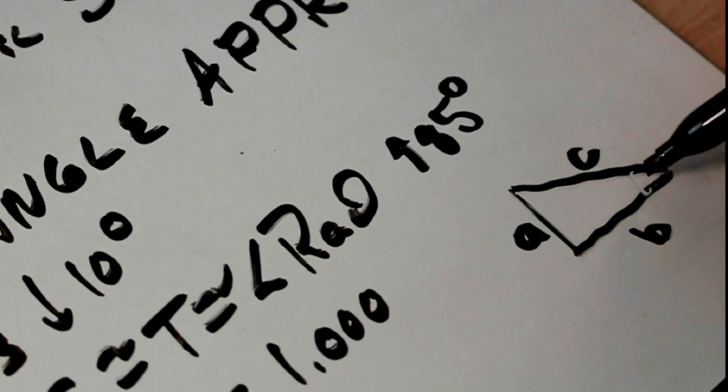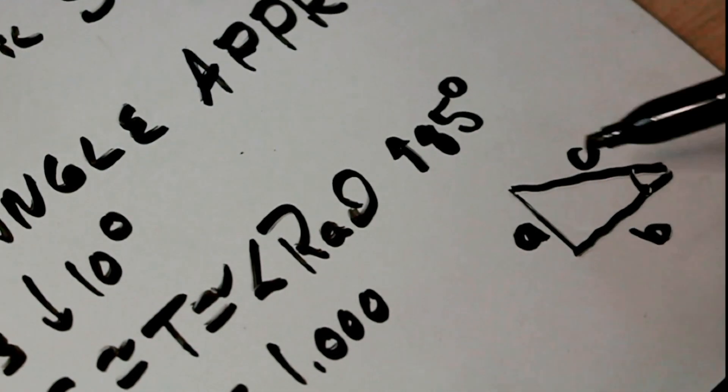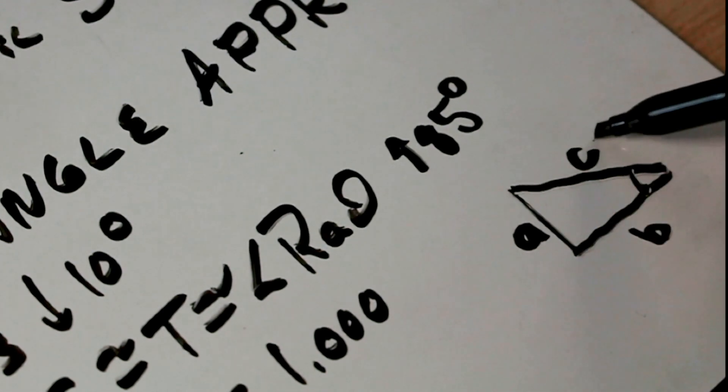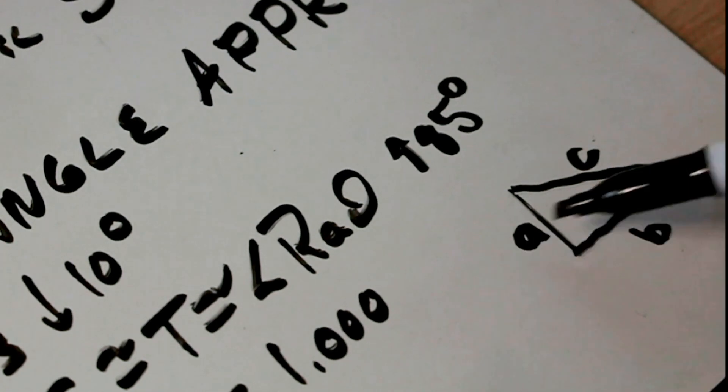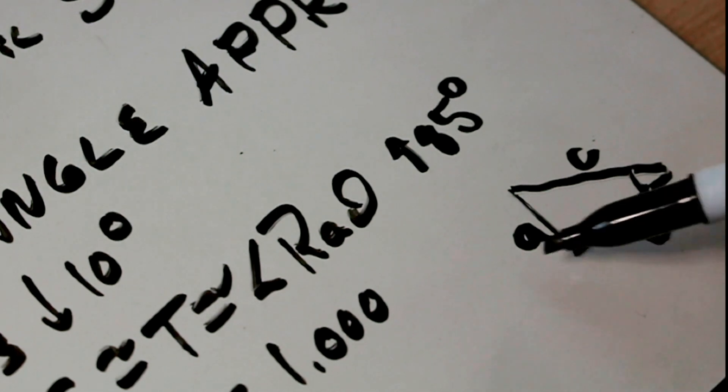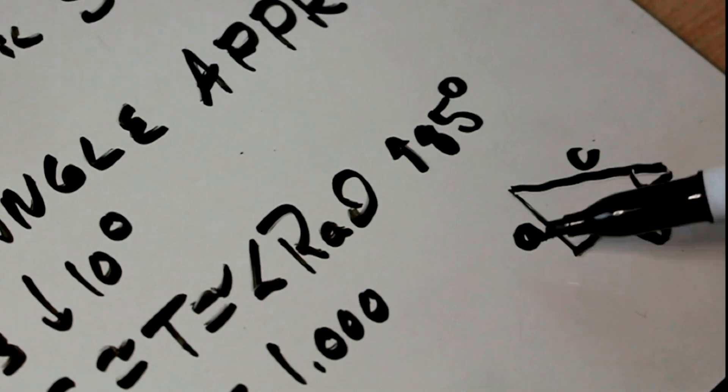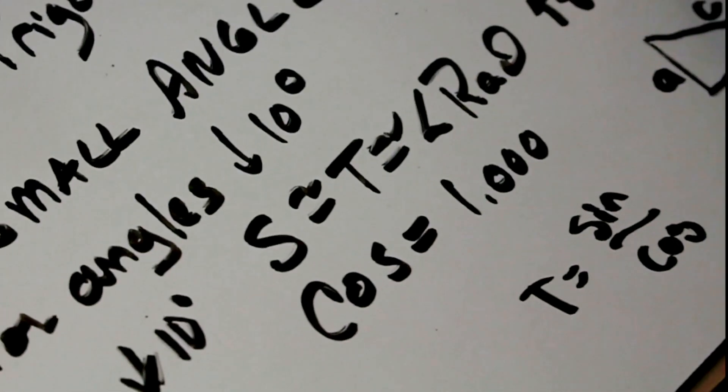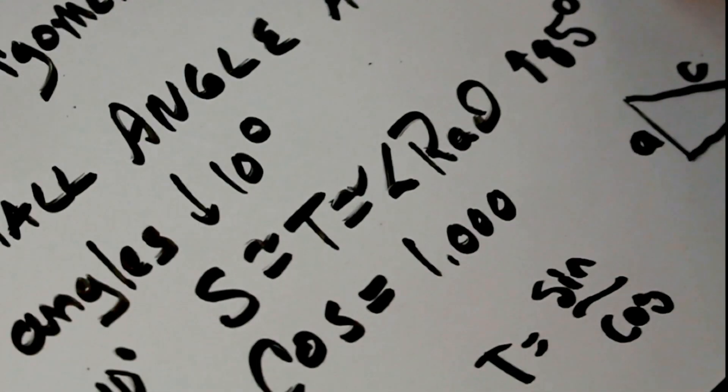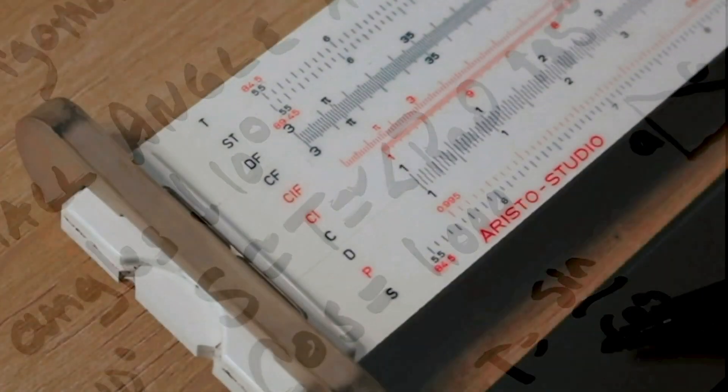As you recall, the sine would be the opposite over the hypotenuse, or side A over side C. Cosine, likewise, would be side B over side C. And the tangent would be side A over side B. If you know side A and side B, you can get the tangent directly from that. You can also take the sine over the cosine, if those are known values of the angle, and get the tangent from that.